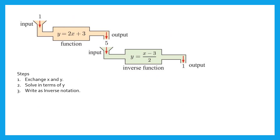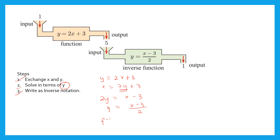Another way of doing this is following these steps. Step 1 is to exchange x and y. So if we have y equals 2x plus 3, we interchange to get x equals 2y plus 3. Step 2 is to solve in terms of y: 2y equals x minus 3, so y equals x minus 3 all over 2, dividing both sides by 2. Then write this in inverse notation: f inverse of x equals x minus 3 over 2.